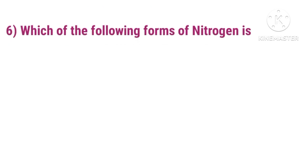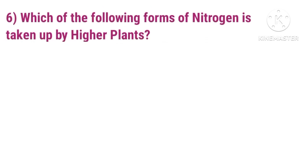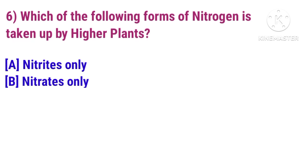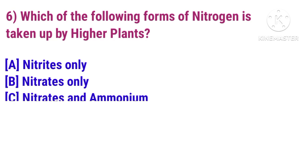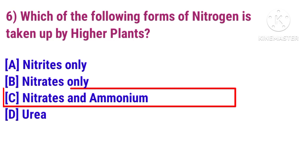Question 6: Which of the following forms of nitrogen is taken up by higher plants? Answer is Nitrates and Ammonium.